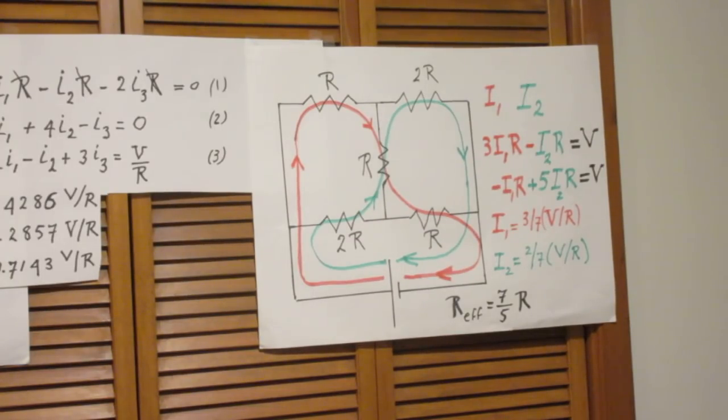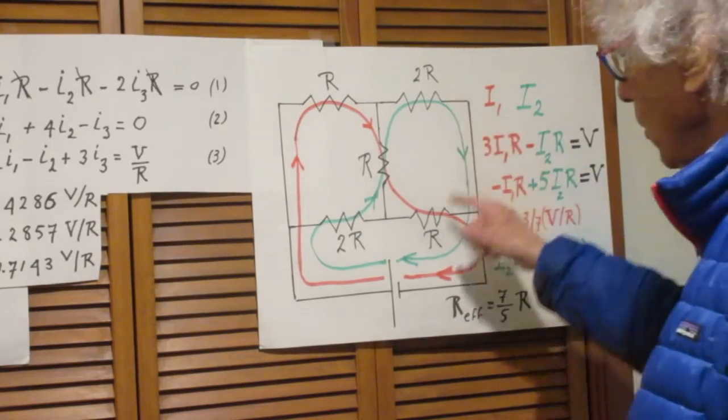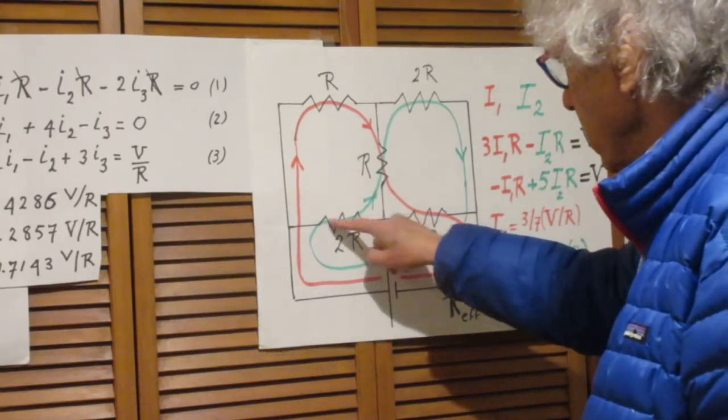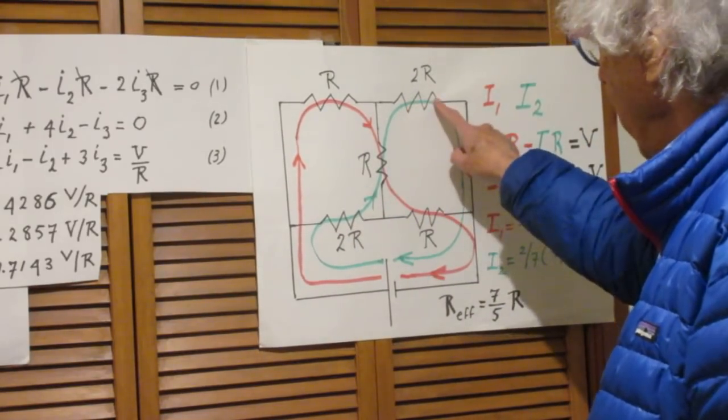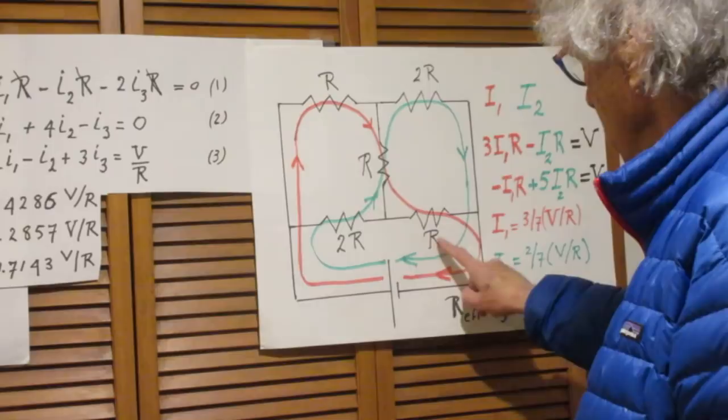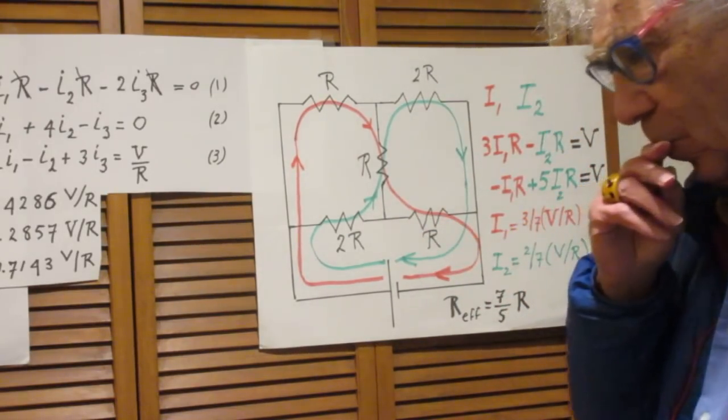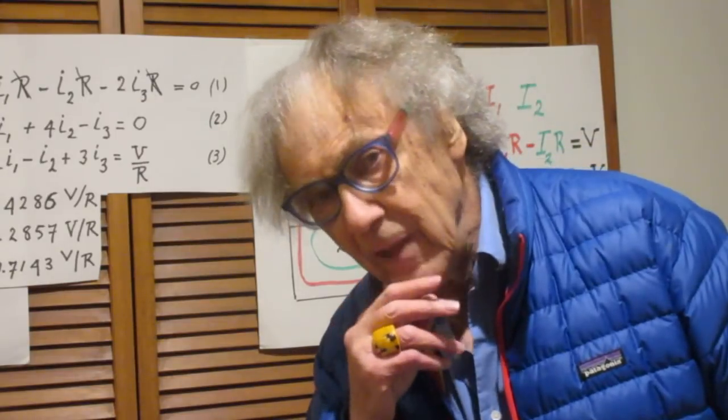And what do I find? I found the exact same results that I found before using the brute force method. And I then jump to the conclusion, looking at these closed loops, that therefore the current through here must always be the current through there, and the current through here must always be the current through there. That's wrong.